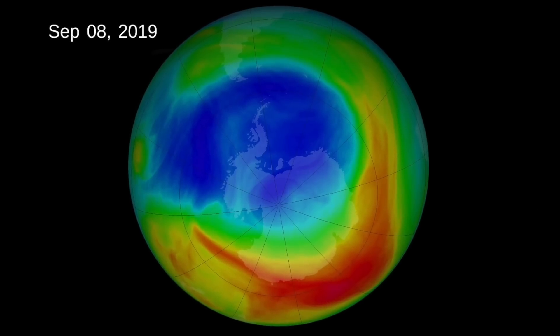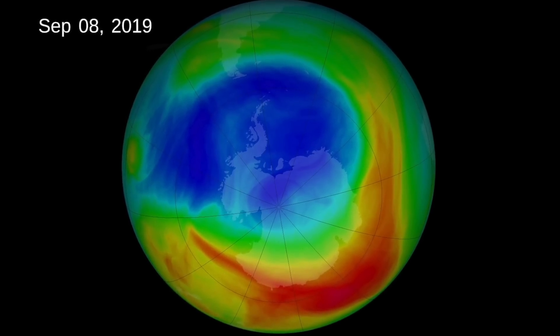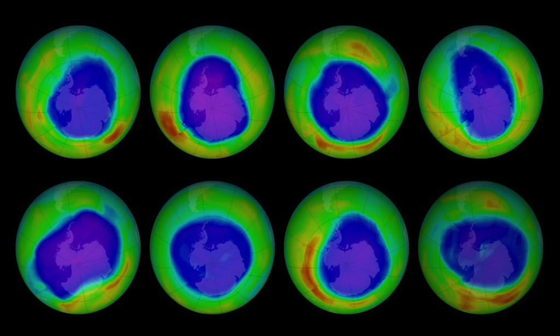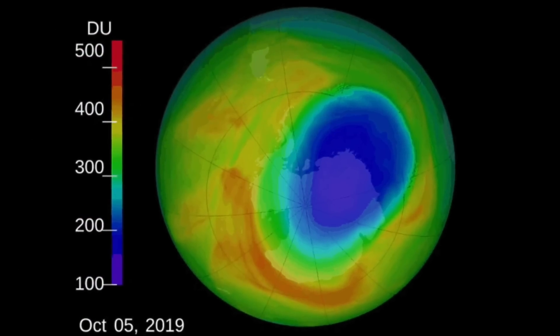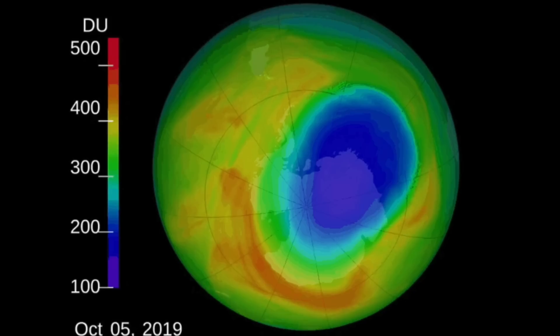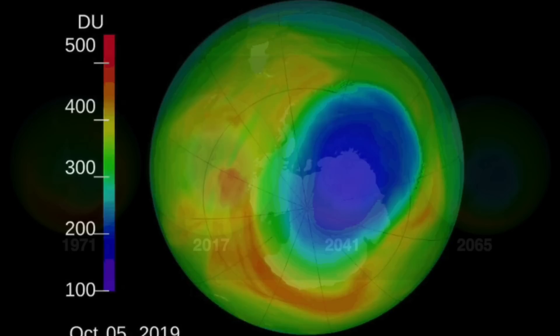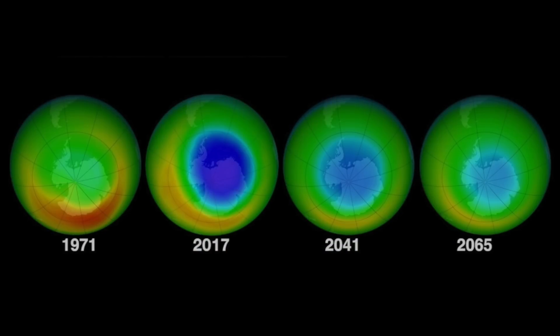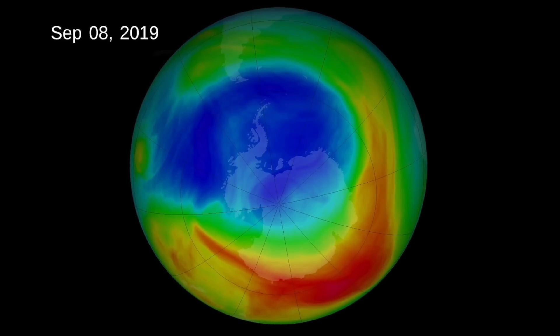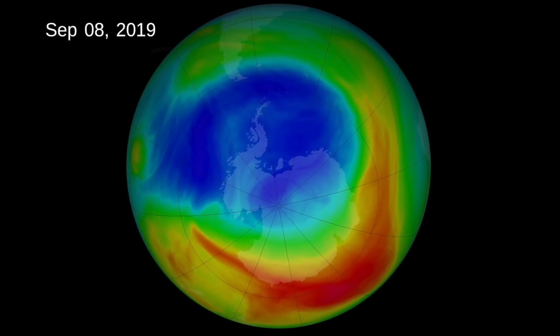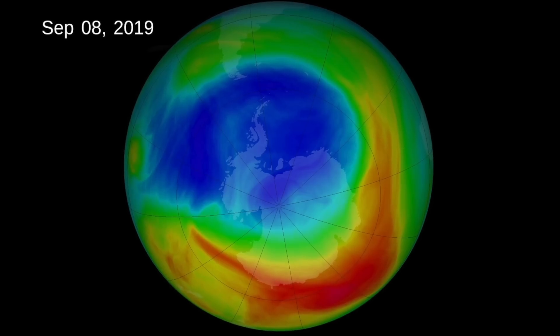Unusually warm weather led to the smaller ozone depletion. Similar weather patterns in 1988 and 2002 also resulted in atypically small ozone holes. Normal weather conditions tend to result in a maximum area of about 8 million square miles in late September or early October. The 2019 weather systems were unusually strong, warming the Antarctic stratosphere. It was 16 Celsius warmer than average during September, a time where ozone destruction is normally at its peak. According to NASA, it was the warmest September for 40 years.